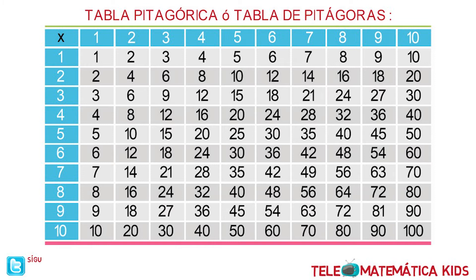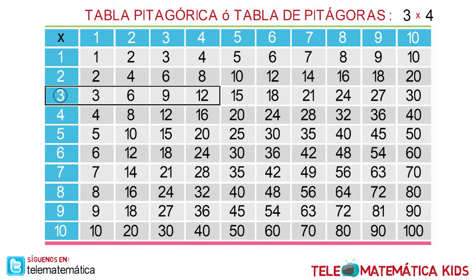Now, how to multiply by applying the table — let's see a first example: 3 multiplied by 4. The first step is to select the row or column that contains the first factor, which is the number 3. The second step is to select the column that contains the second factor, which is the number 4. The third step is to select the value found at the intersection of the row and column as the result. Then, 3 multiplied by 4 is equal to 12.